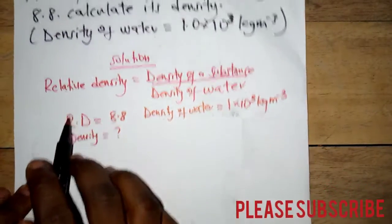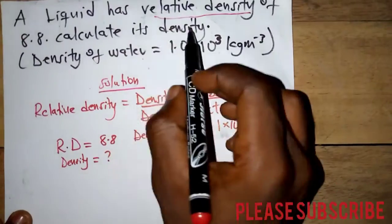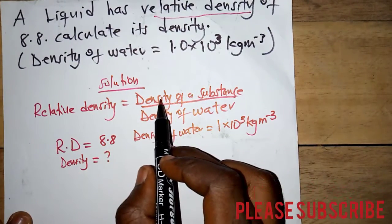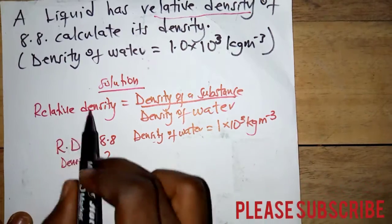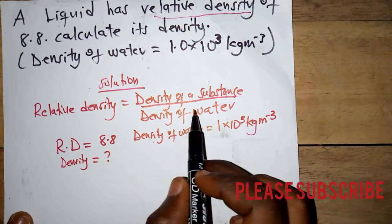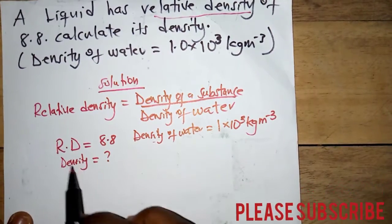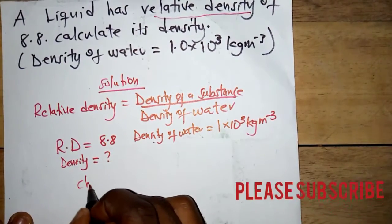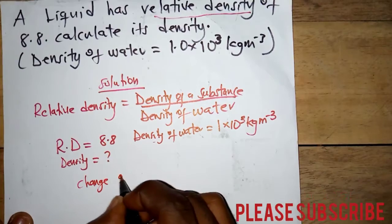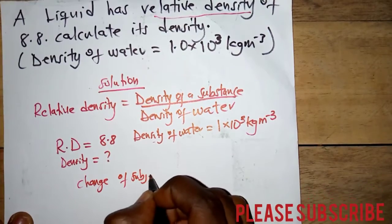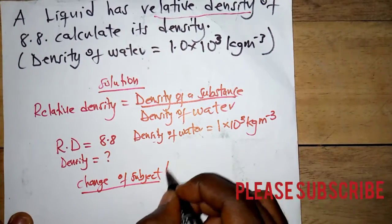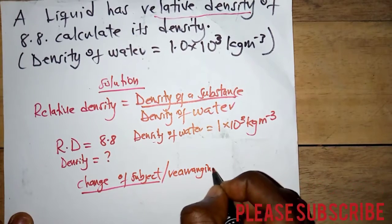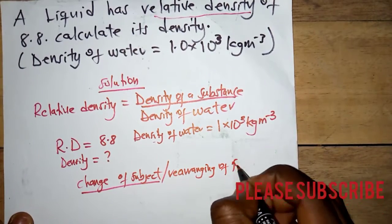We have to find the density of the substance. Since we know the relative density and the density of water, we need to do what we call a change of subject — that is, rearranging our formula to solve for the density of the substance.